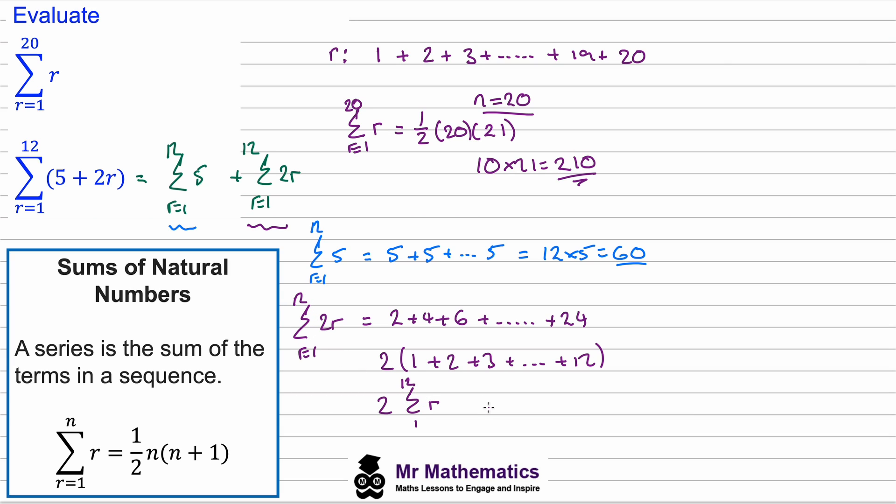So for this example we know we're looking at 12 terms, so n will equal 12. So the summation then will be equal to 2 lots of one half multiplied by n multiplied by n plus 1. You can see the 2 and the half will cancel, and the 12 times 13 makes 156.